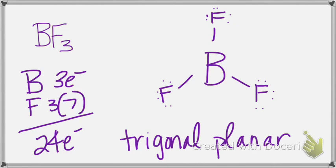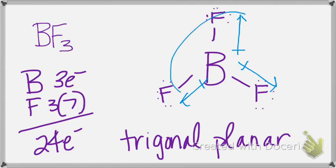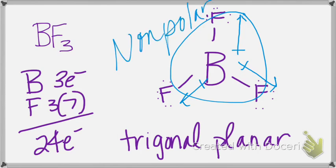Fluorine is definitely most electronegative, so our dipoles point toward the fluorines. Is that an even distribution of charge? Yes — negative, negative, negative all the way around — this would be nonpolar. What's the bond angle? What is 360 divided by three? 120. It's evenly spaced out, so it's 120 degrees. Lone pairs would only affect shape if they come from the central atom. These are lone pairs for fluorine on the terminal atoms, but they do not affect your structure.